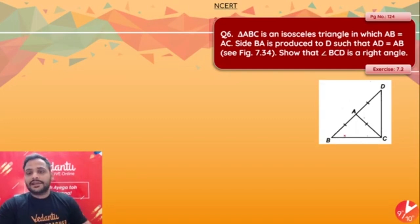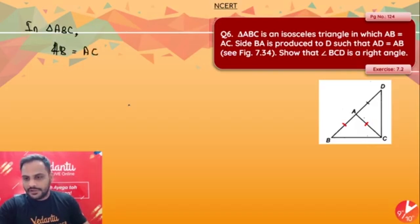Let's go for the next question. Triangle ABC is an isosceles triangle in which AB is equal to AC. I can clearly see ABC is an isosceles triangle in which AB is equal to AC. So one thing for sure I can say here is that in triangle ABC, since AB is equal to AC, we can say that angle ABC is equal to angle ACB. Let's name both of them as x degrees.